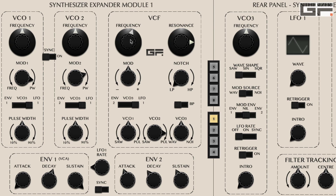The filter mode is set by either the knob that progressively changes the filter mode from low pass through notch and high pass, or via the band pass mode switch. When band pass is activated, the knob above has no effect.